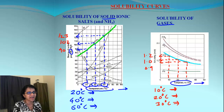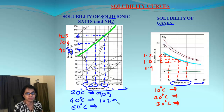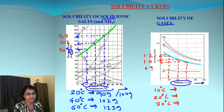For example, at 20 degrees we go up and then across to the y-axis and get 90 — meaning 90 grams is the amount dissolved at 20°C. Repeating at 40 degrees gives roughly 100-102 grams, and at 60 degrees we get roughly 123 grams. Each value is dissolved in 100 grams of water.